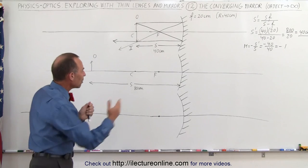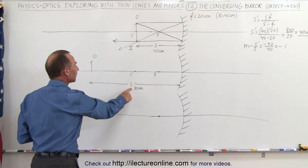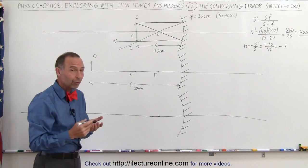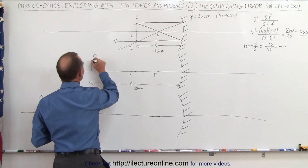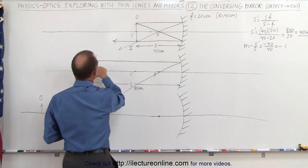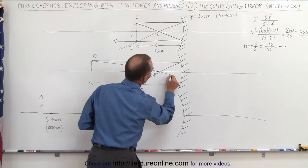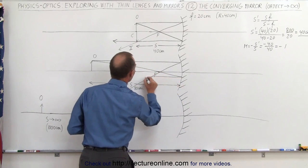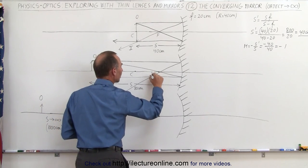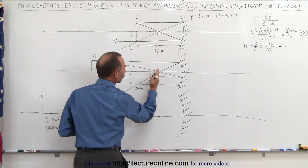Now we move the object farther away — twice as far, so the object distance is now 80 centimeters. We'll first do it graphically. We draw a line parallel to the optical axis. It hits the mirror and reflects back to the focal point. The second ray is drawn through the focal point, continues until it hits the mirror, then reflects back parallel to the optical axis. Where the two rays meet is where the image appears. Notice the image moved closer to the mirror — closer to the focal point.